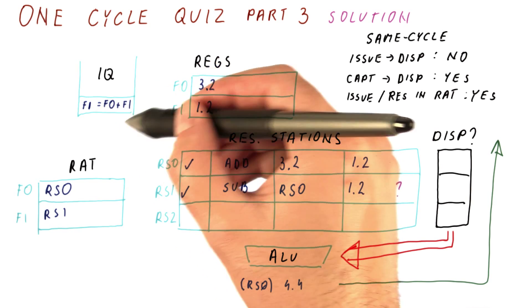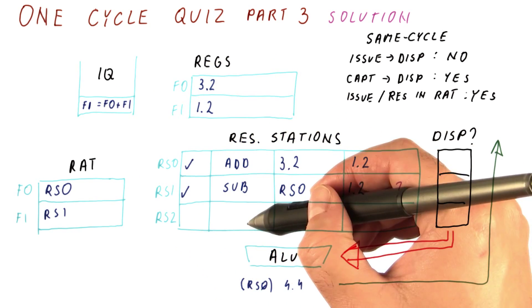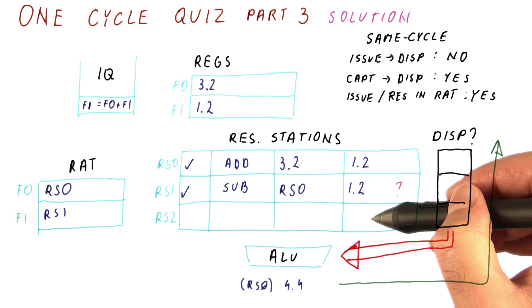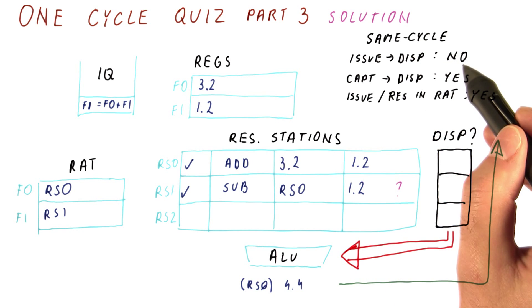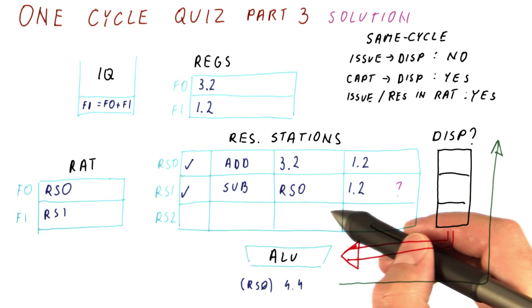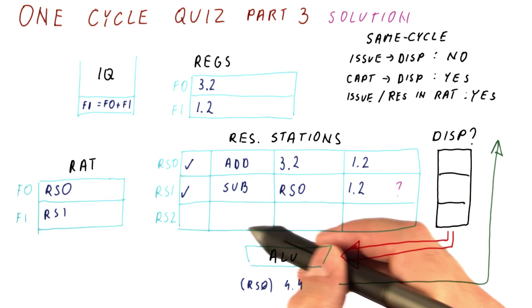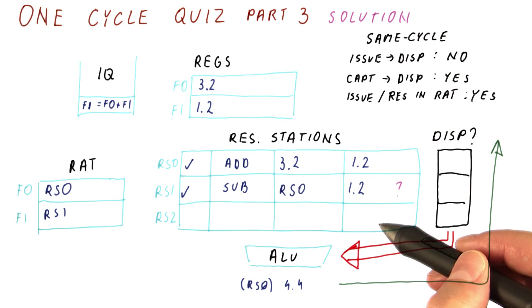We are also going to issue this instruction here into a reservation station. But because issue and then dispatch is not allowed in the same cycle, that means this instruction, even if its operands were ready, would not be eligible for dispatch now.